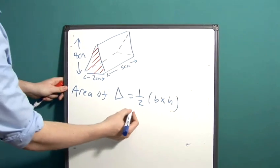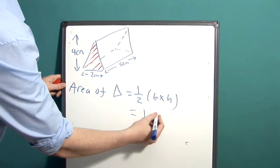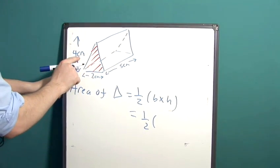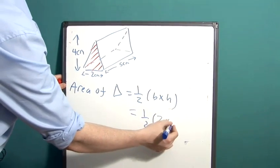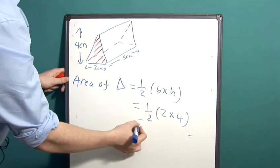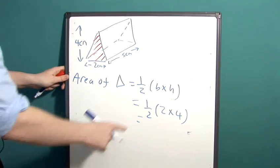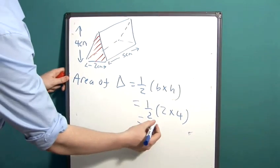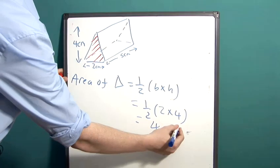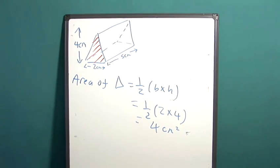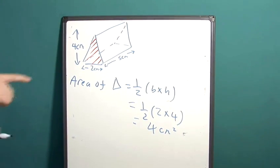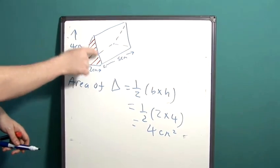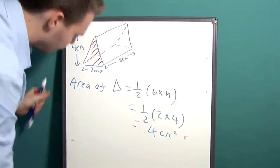For our triangle, we're going to have one half multiplied by two multiplied by four. Two multiplied by four is eight and half of this is four. Remember our units are four centimeters squared because we're dealing with an area and that's in two dimensions. So let's remember that the area of this triangle here is four centimeters squared.